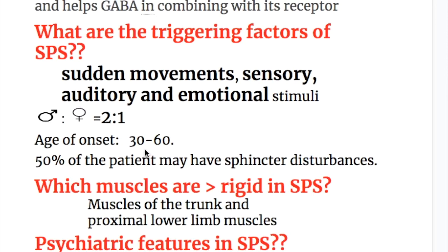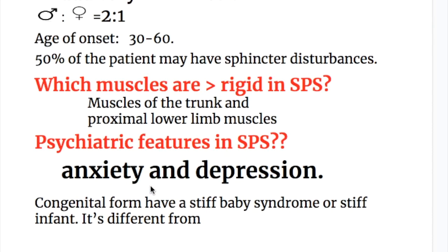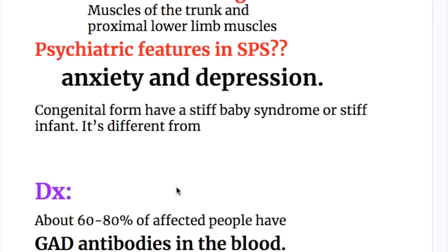Triggering factors of stiff person syndrome include sudden movement and sensory, auditory, and emotional stimuli. The female to male ratio is 2 to 1 and the usual age of onset is between 30 to 60 years of age. Fifty percent of patients have sphincter disturbances. Muscles of the trunk and proximal lower limb muscles are more rigid. Psychiatric features include anxiety and depression.